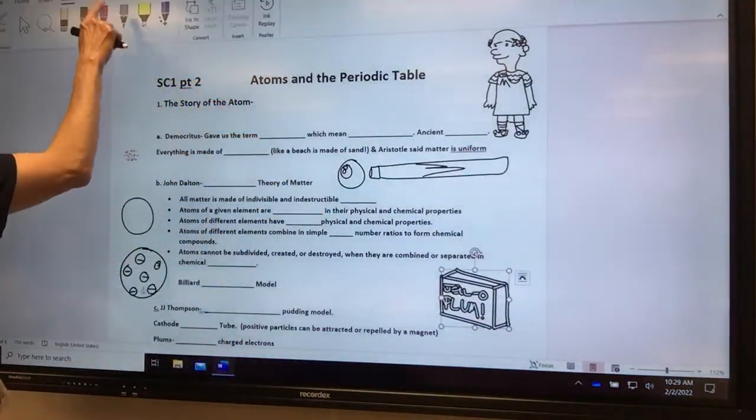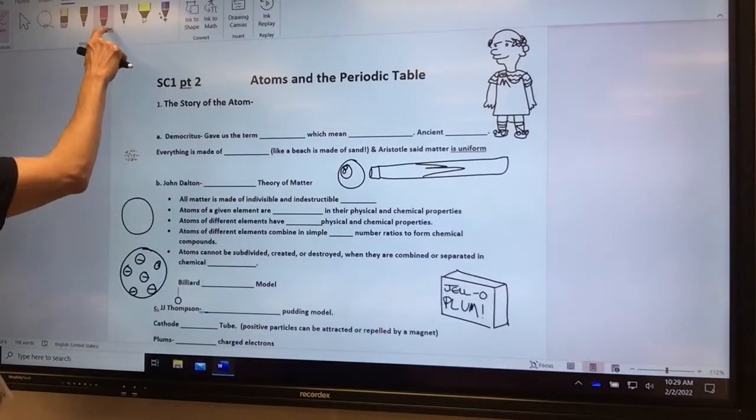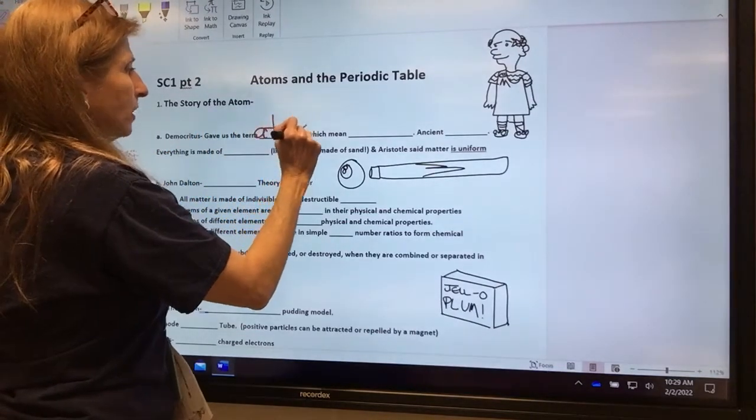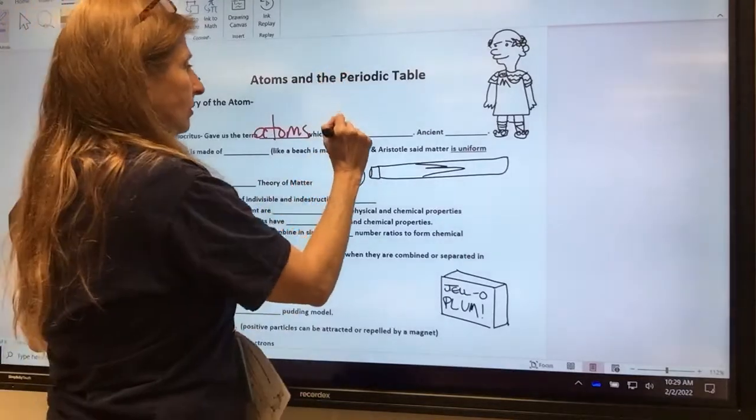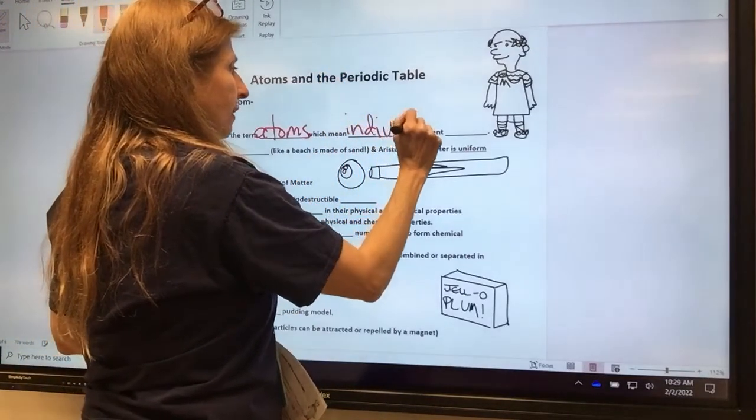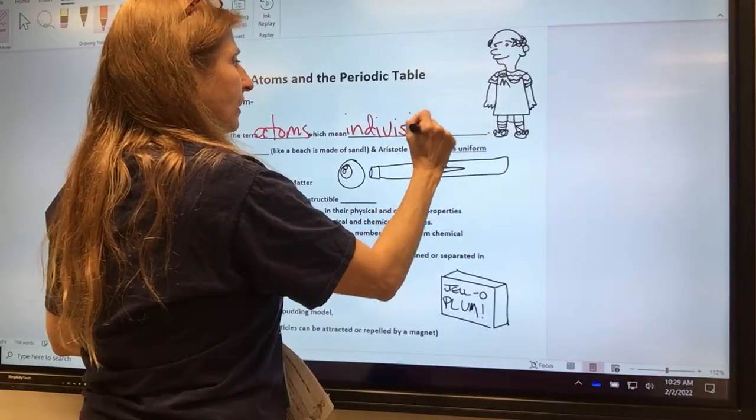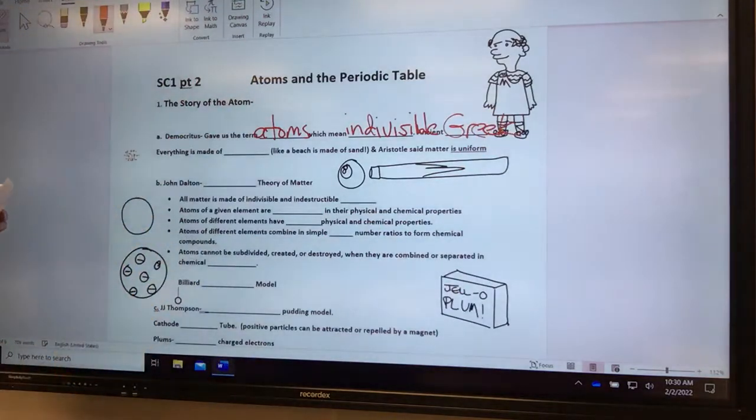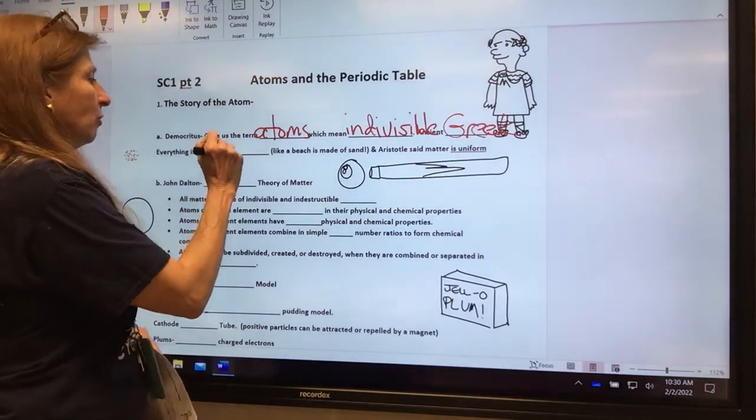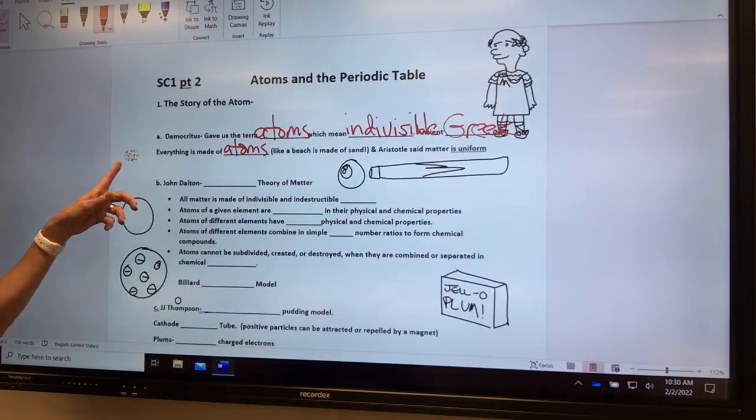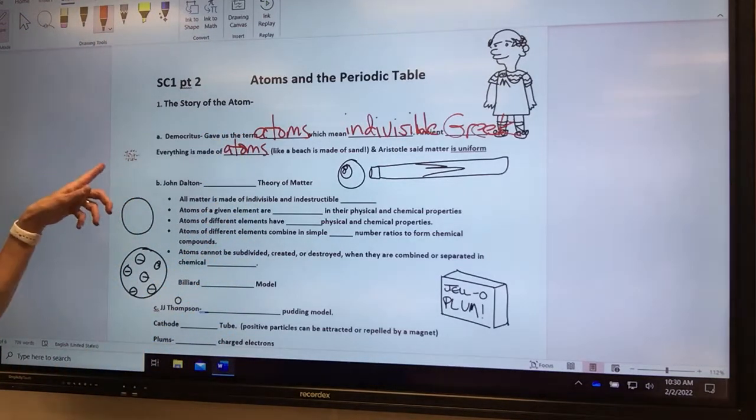When you say the Pledge of Allegiance, you can say one nation under God, atoms with liberty and justice for all, because it means indivisible. He was an ancient Greek guy. That's why he looks like the little Caesar's man. And he said that everything is made of atoms, like beach is made of sand.